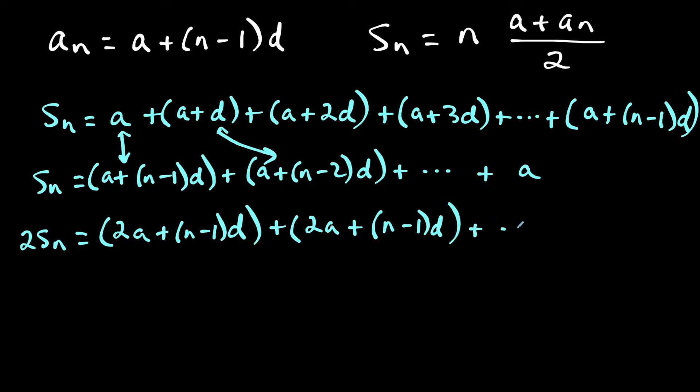And I do this all the way to the end. So when I do the last term here, plus the last term here, notice I get a plus a is 2a plus n minus 1 times d.